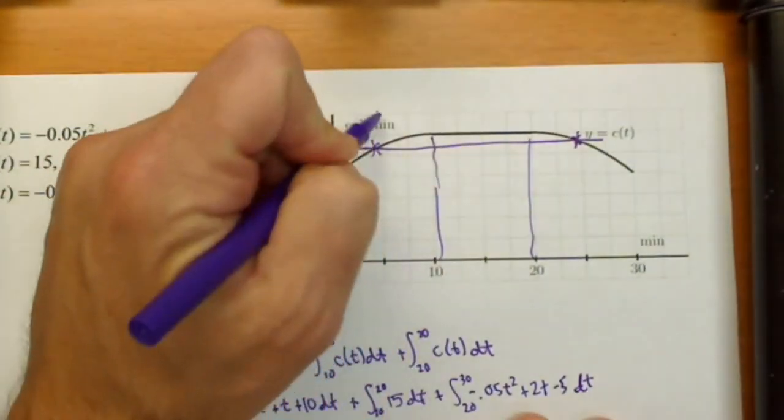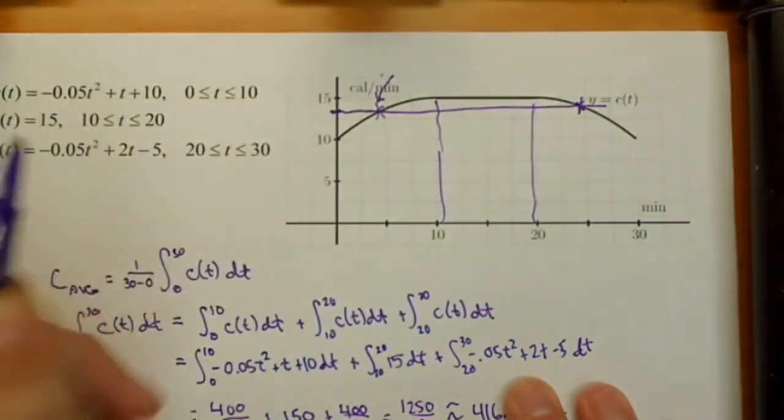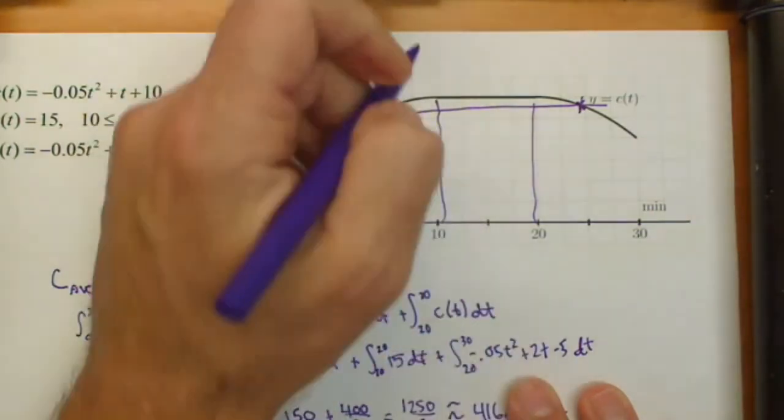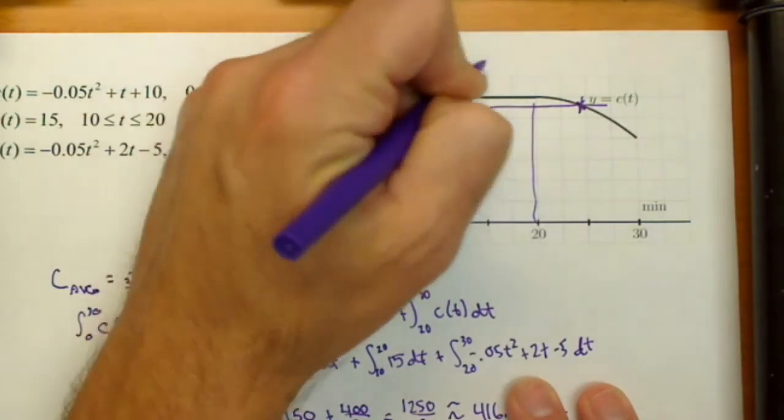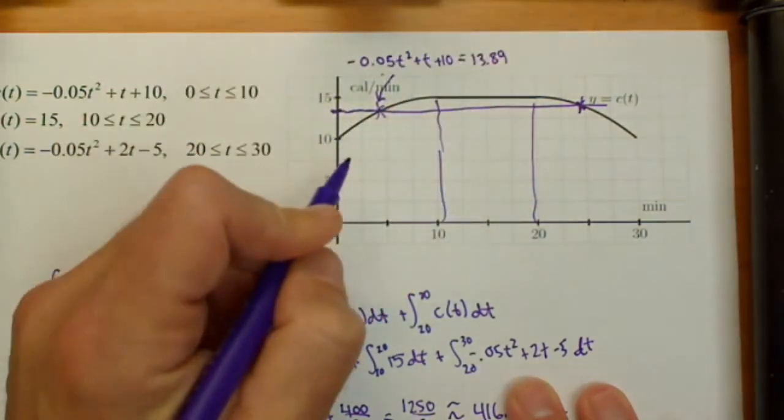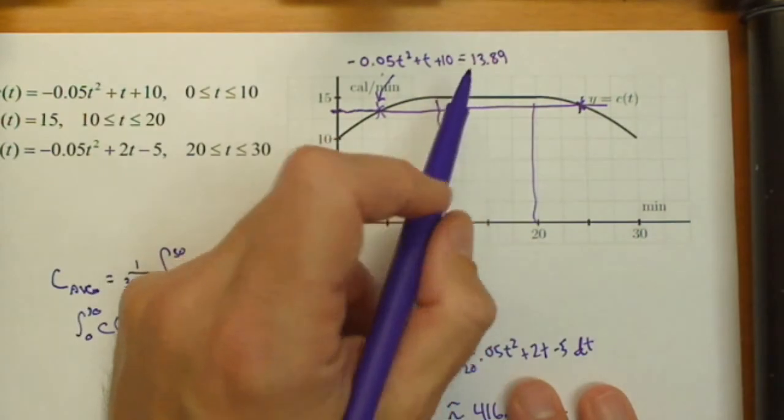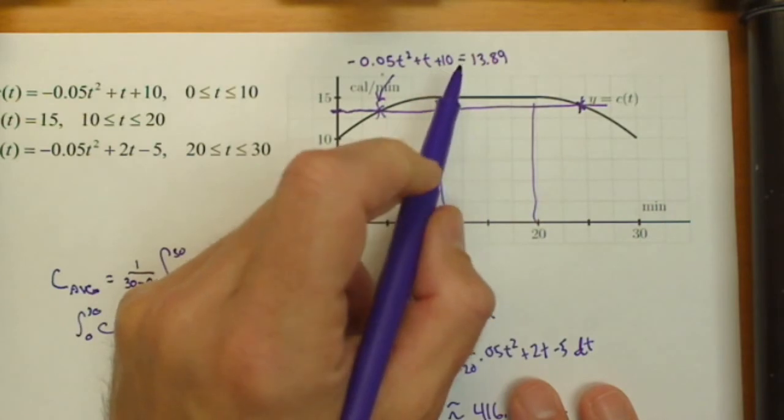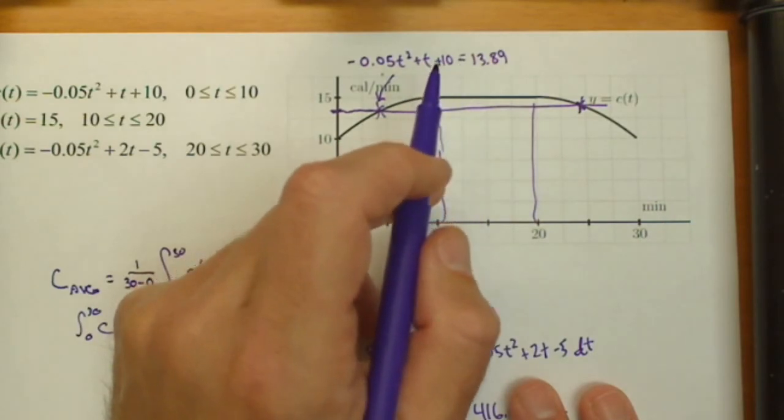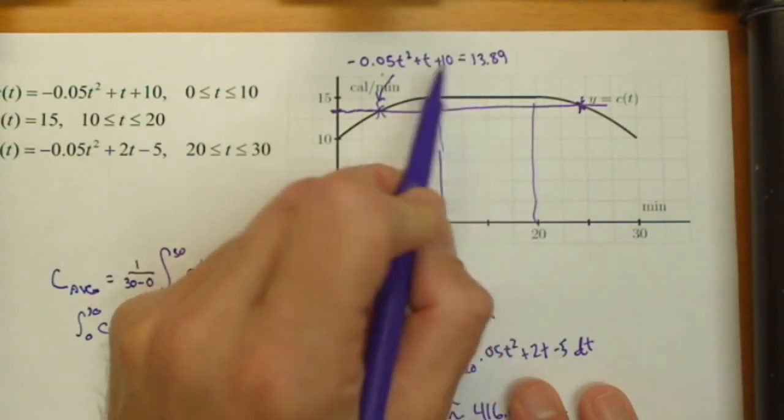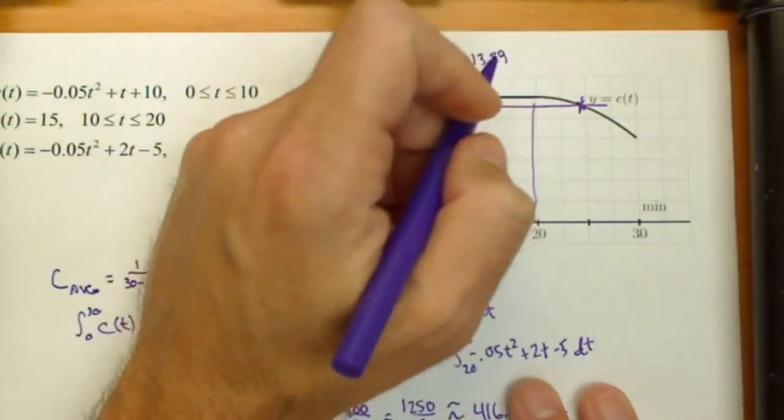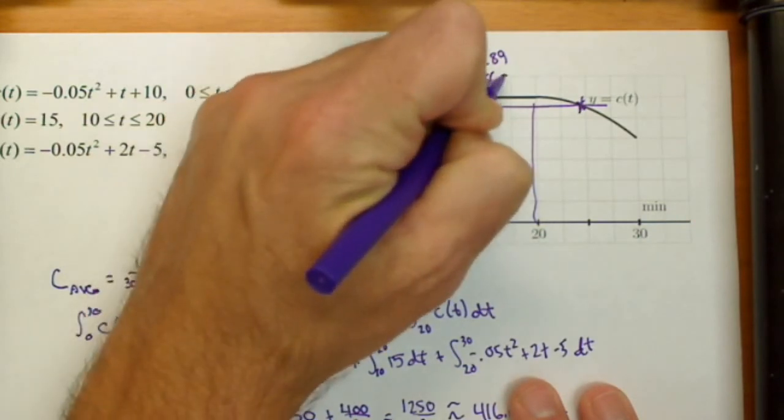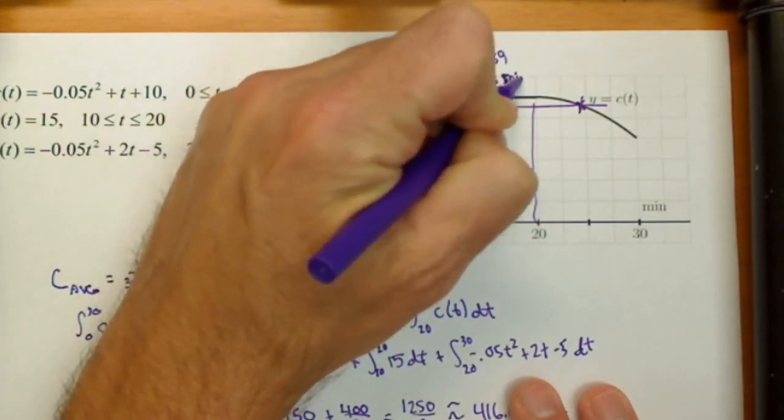So to find this one, excuse me, we're gonna set our rate, which is negative 0.05 T squared plus T plus 10 equal to our 13.89. Now solving this, you subtract the 13.89 from both sides, and you can use the quadratic formula. That will work just fine. You're gonna get two answers. Only one of them lies between zero and 10. And that answer is gonna be T is about 5.286 minutes.